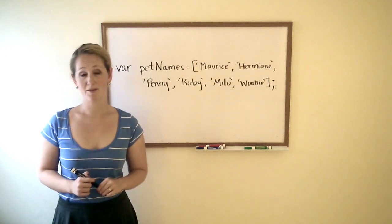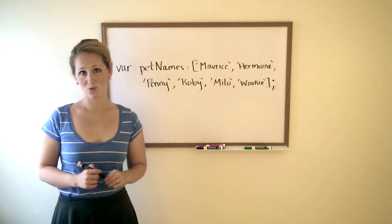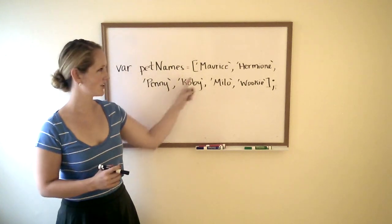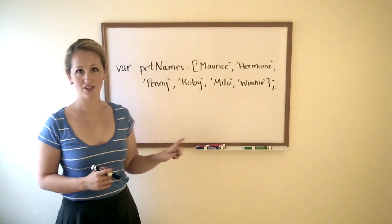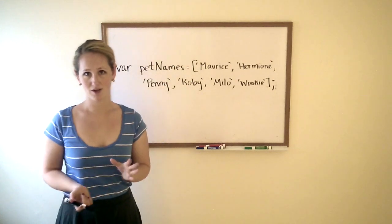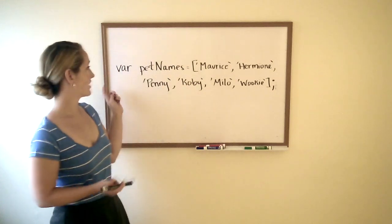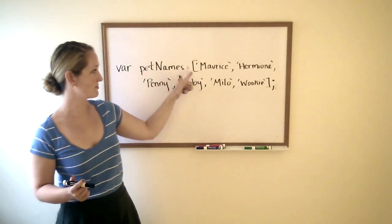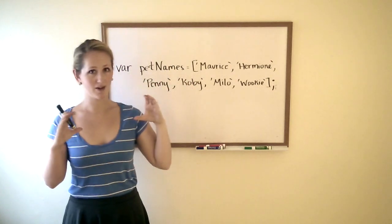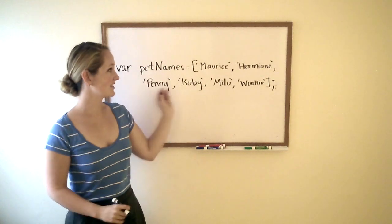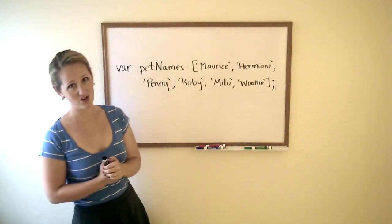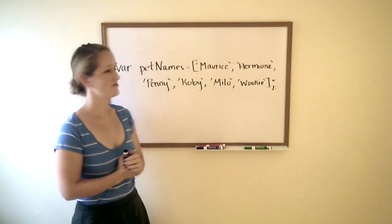In this video, we're going to talk about indexing arrays — how you access a certain piece of information inside of an array. This array, called 'pet names' — you can tell it's an array because of the square brackets — is a list of pet names that either I own or my friends own.